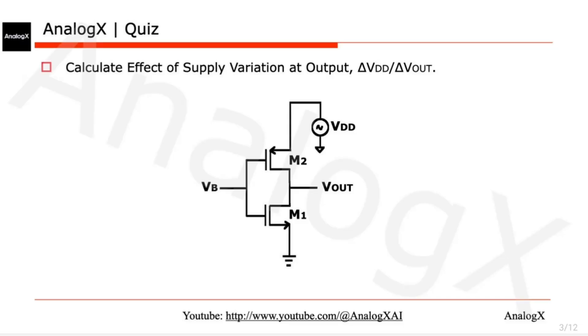We will do small signal analysis. This is a bias voltage that will be analog ground, so that won't change. We will include the output resistance of these transistors also.